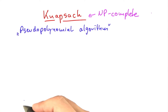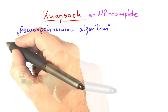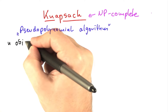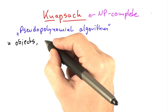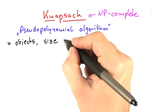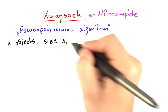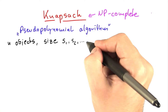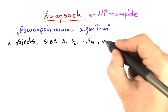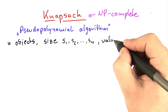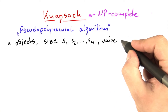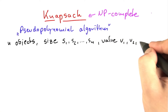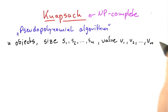I'm first going to explain the algorithm to you. You're given an instance of Knapsack, which means you're given n objects. Each one has a size, so we'll label those sizes s1, s2, until you get to sn. Each object also has a value, labeled the same way: v1, v2, and so on until vn.